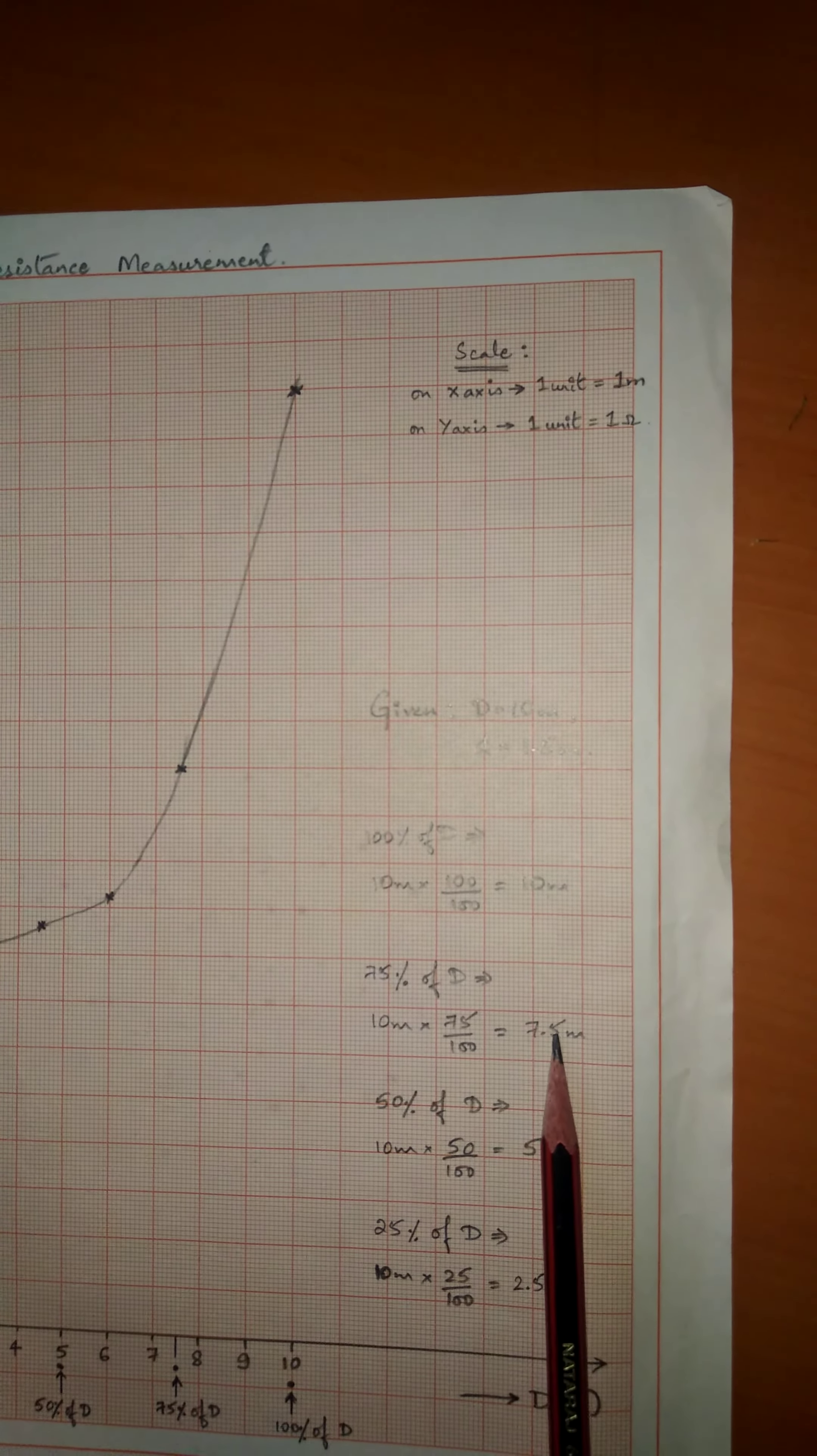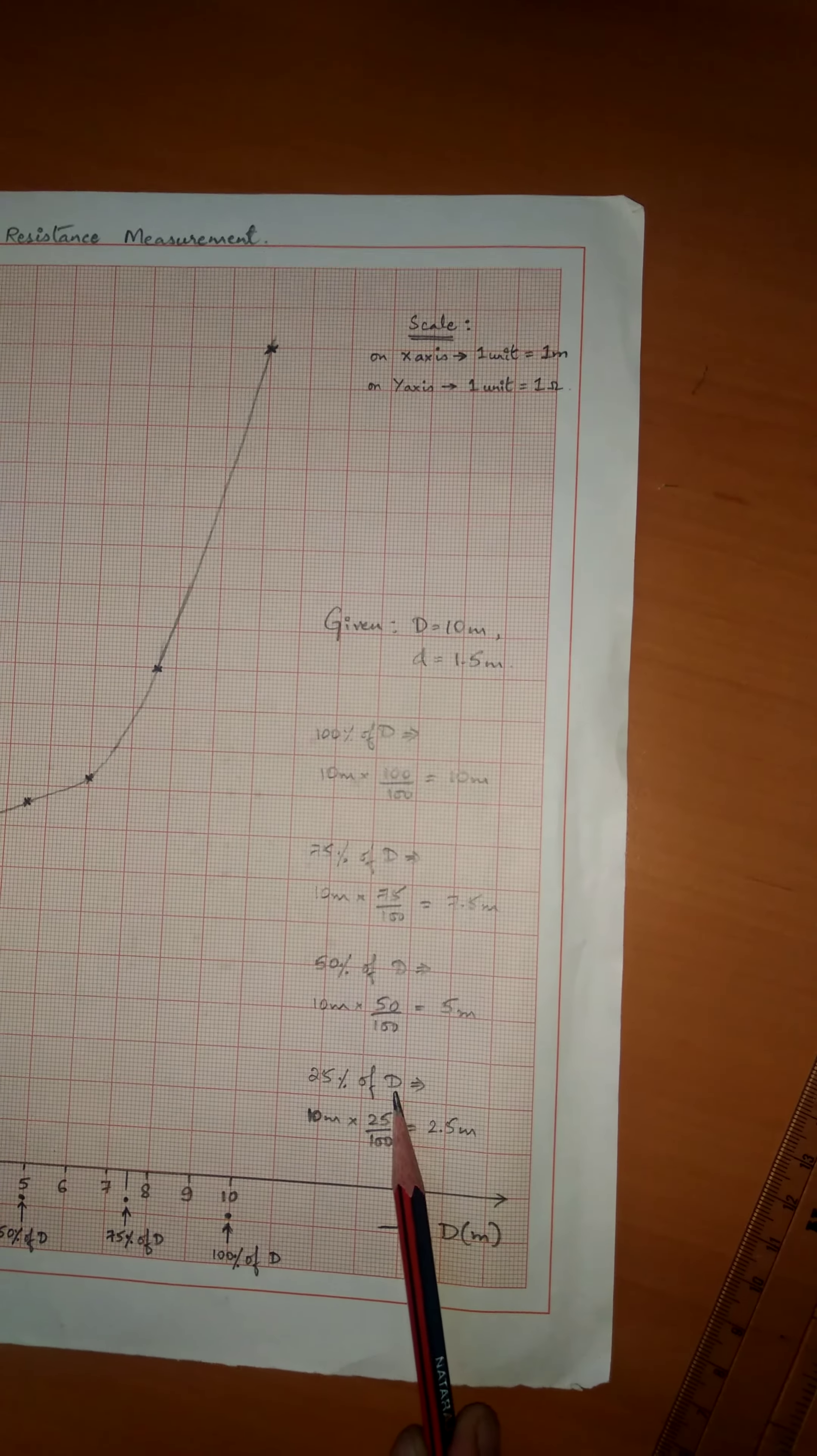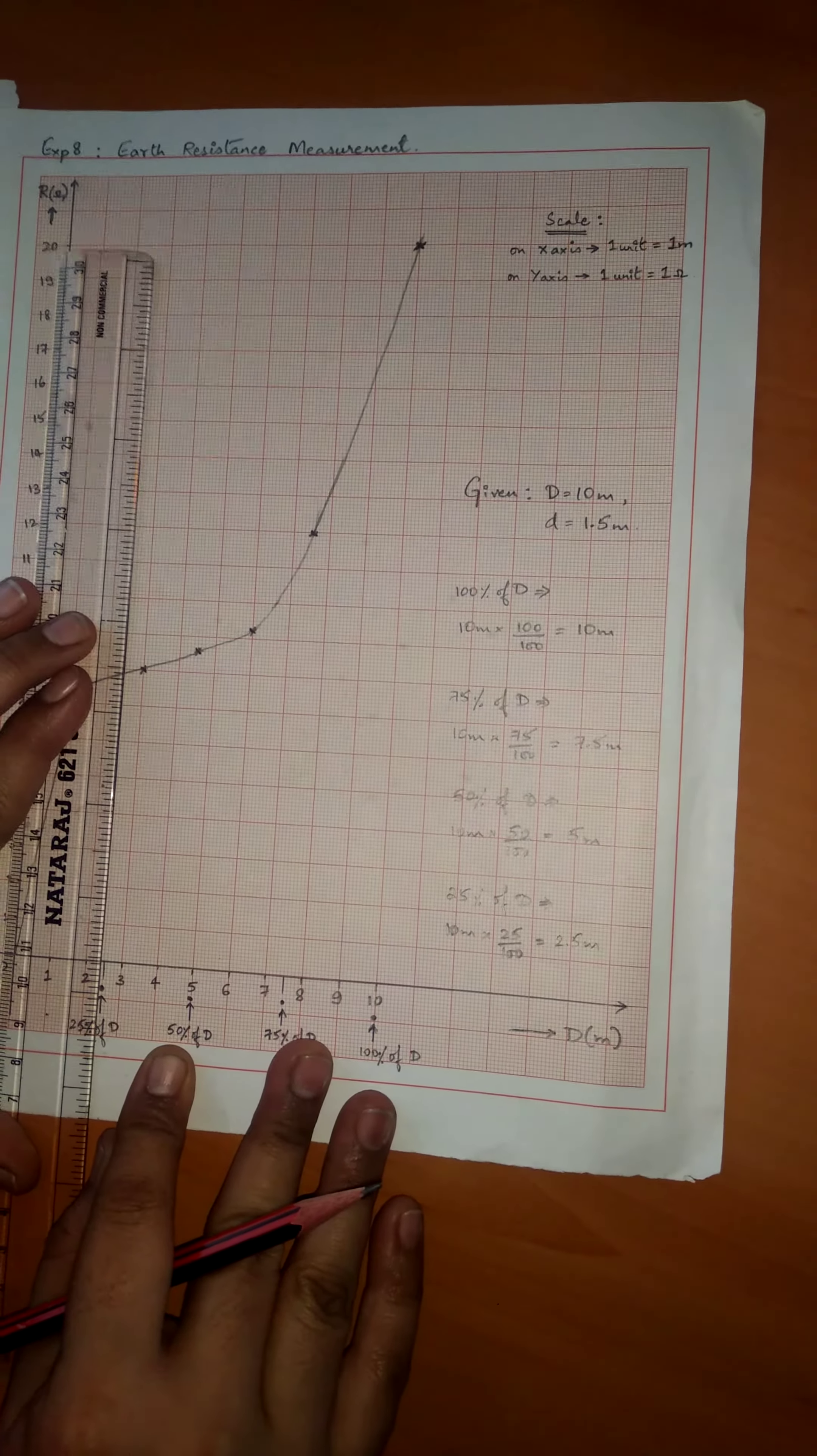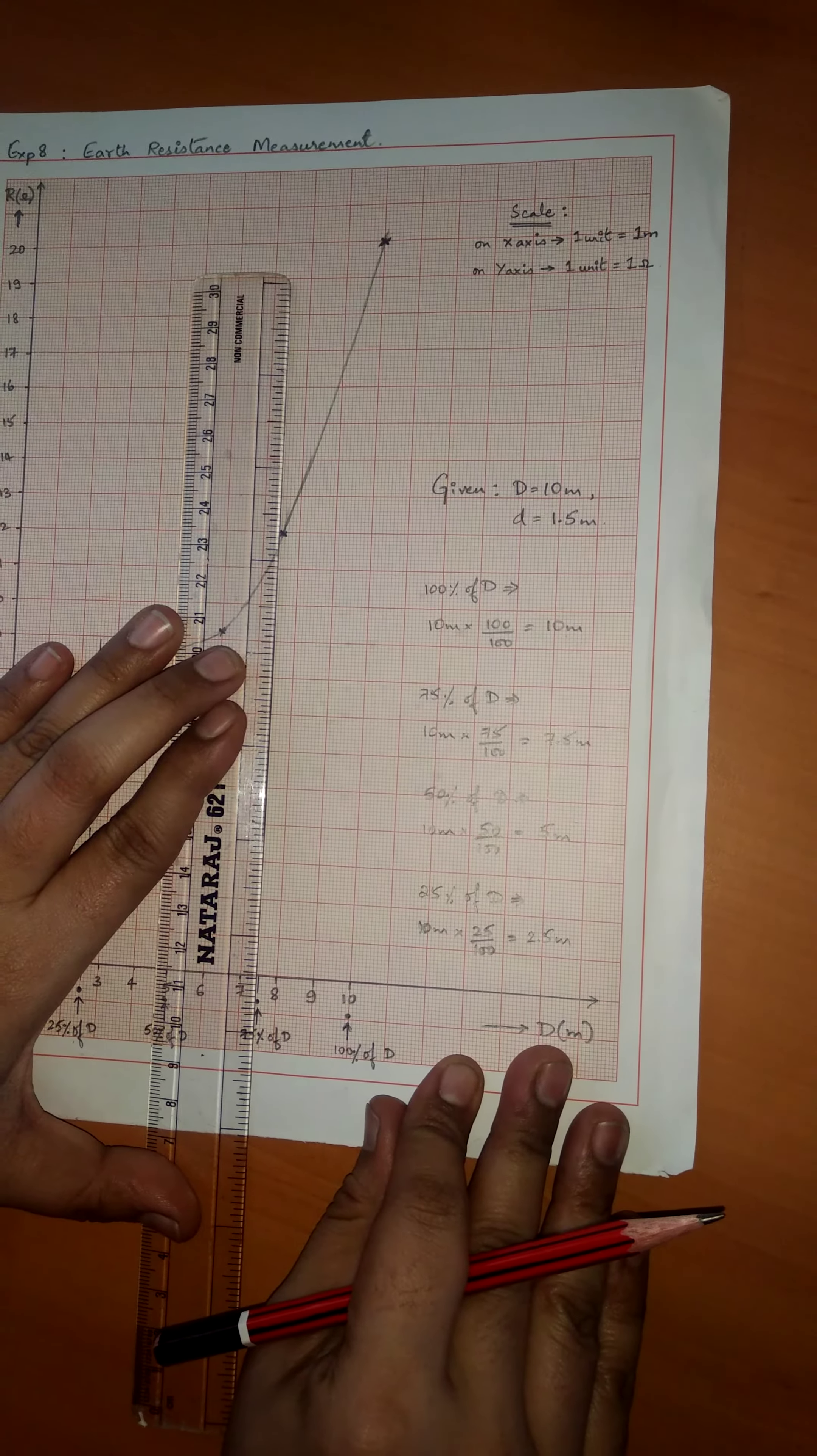75% of D is 7.5 meters. 50% of D is 5 meters and 25% of D is 2.5 meters. All of those points are also marked in the graph and extrapolate the points between 25% and 75% of D.